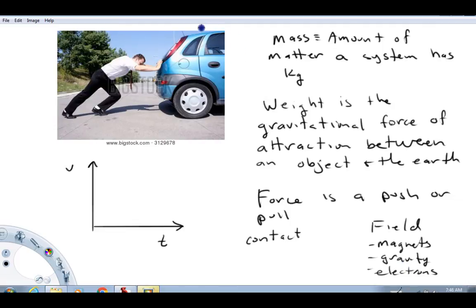Over on the left here is the picture we're going to work from when we talk about Newton's second law, but before we do that I've got a couple things I want to make sure that everyone's aware of. First thing we need to talk about is mass. Mass is defined as the amount of matter a system has. It's measured in a quantity called the kilogram.